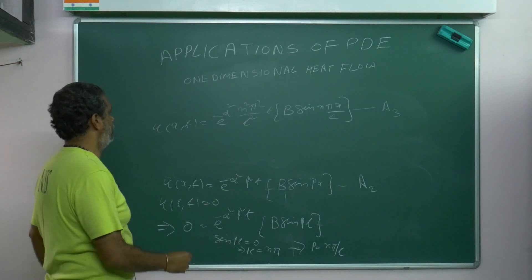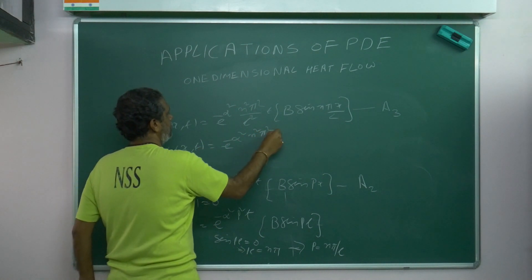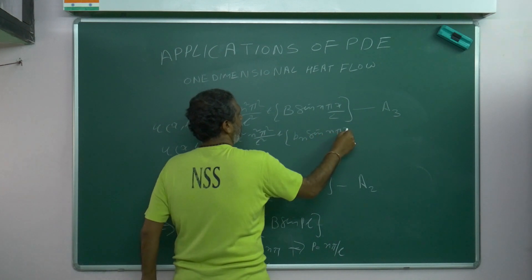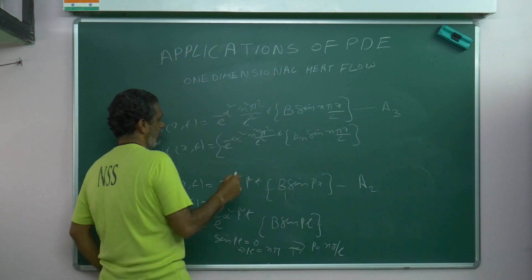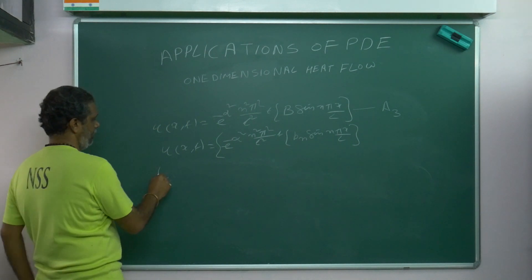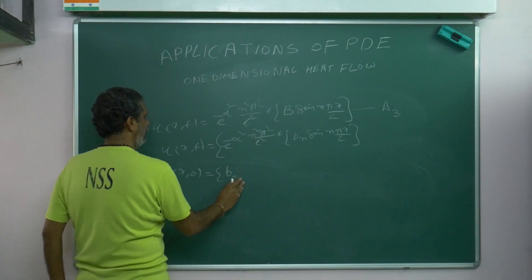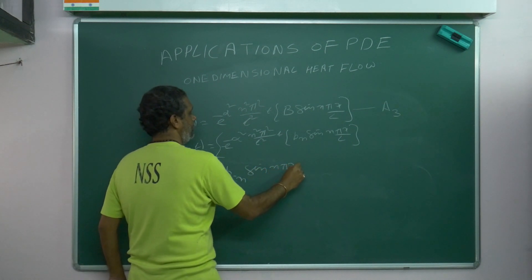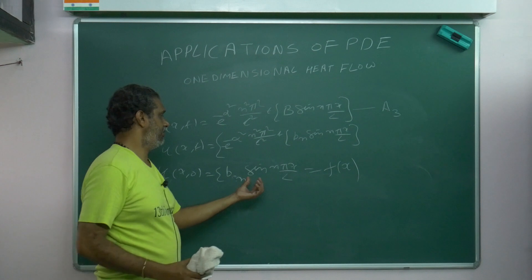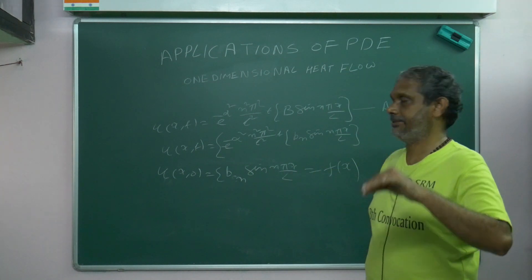Writing the superposition solution: u(x, t) = Σ Bₙ · e^(−α² · n²π²/L² · t) · sin(nπx/L). Applying the last condition — u(x, 0) = f(x) — the exponential becomes 1, giving Σ Bₙ sin(nπx/L) = f(x). This is nothing but a half-range sine series, so we can find Bₙ from this.